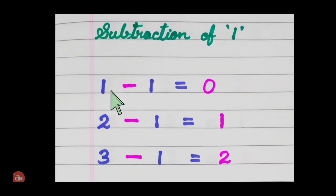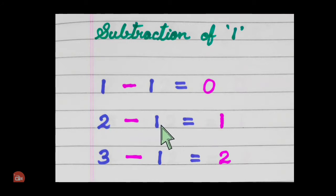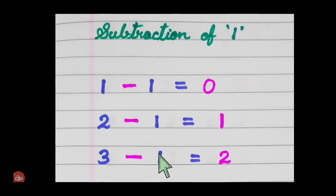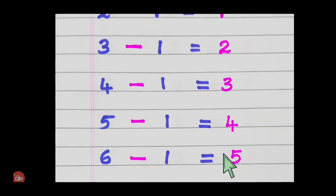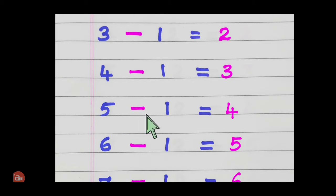Ok, let's begin. One minus one equals zero. Two minus one equals one. Three minus one equals two. Four minus one equals three.